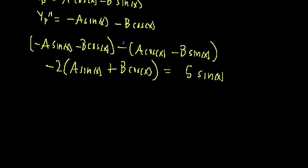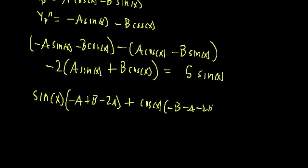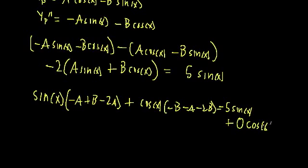Let's simplify the left-hand side by grouping all sine terms and all cosine terms. Grouping sines gives sin(x)(−A + B − 2A). Grouping cosines gives cos(x)(−B − A − 2B). To make the relationship explicit, rewrite the right-hand side as 5 sin(x) + 0·cos(x). The value doesn't change — we're just adding zero.